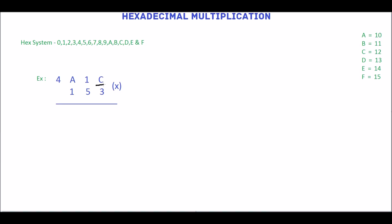C is equivalent of 12. 3 multiplied by 12 is 36. 36 is not a hex number, so we will convert 36 into its equivalent hexadecimal number by dividing by 16. The quotient is 2 and the remainder is 4, so the equivalent hexadecimal number is 24. In this, 4 is the sum and 2 is the carry. Write the sum here and carry over the next digit.